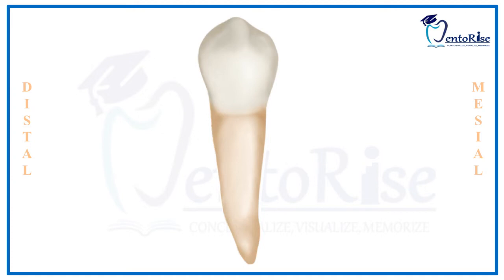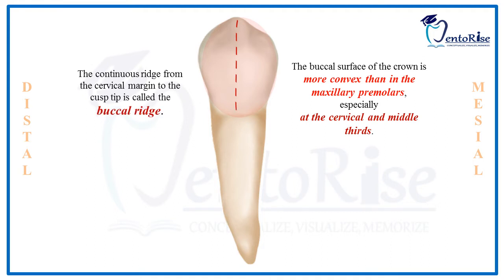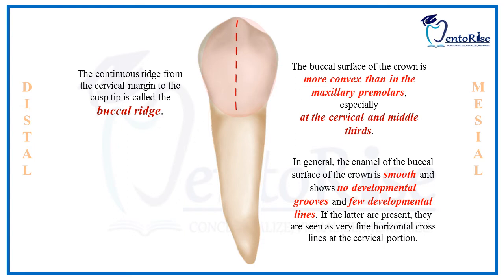The surface of the crown from the buccal aspect is convex. The convexity of the mandibular premolar is more than that of the maxillary premolars, specifically at the cervical and middle thirds. Moving the explorer over the buccal surface, a ridge is observed starting from the tip of the cusp and continuing down to the cervical line — called the buccal ridge. Otherwise, the enamel of the buccal surface is smooth with no developmental grooves and very few developmental lines.